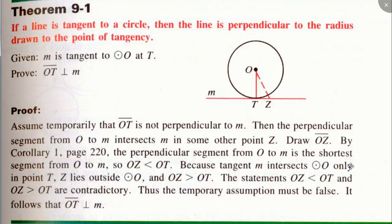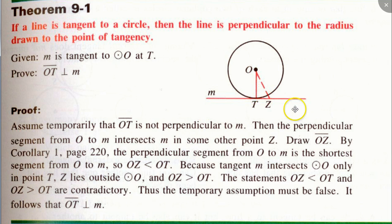Any questions? Do you guys remember proof by contradiction? Good review. So now we know: if M is the tangent line at T, then OT must be perpendicular to line M. From this theorem comes a corollary. Let's see whether we can figure this out.